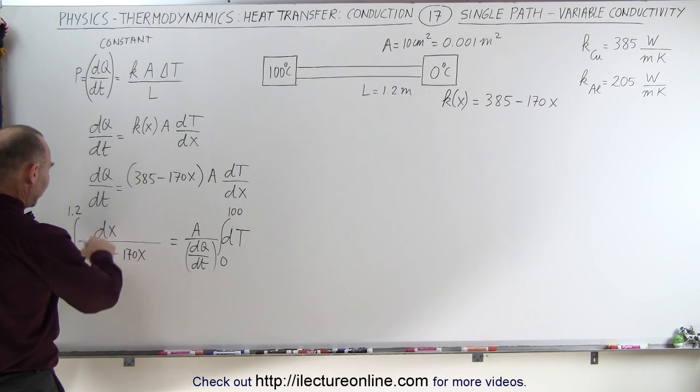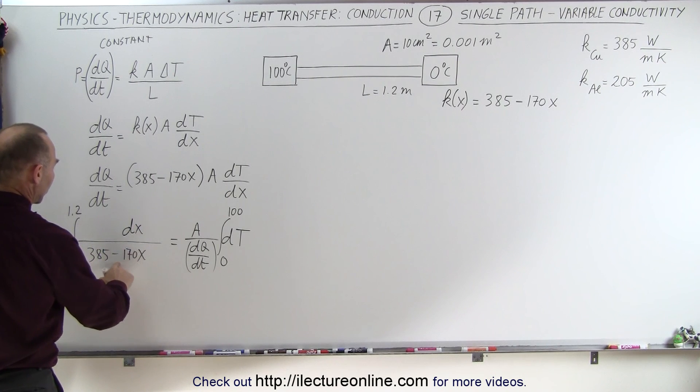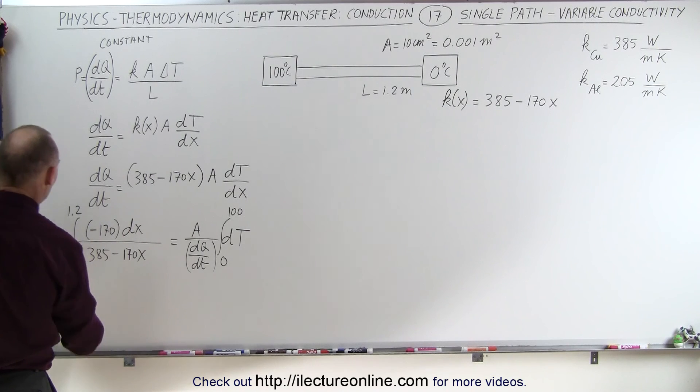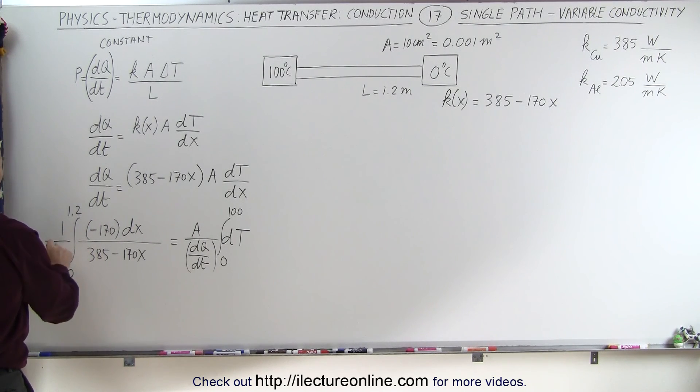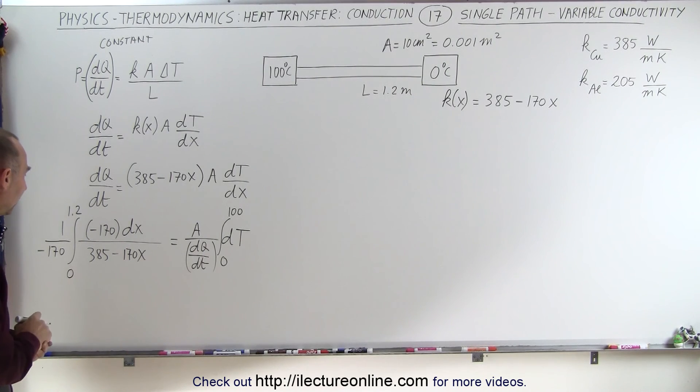But if we want to integrate this, we're going to need a proper differential. So let me move the dx over a little bit. So dx over here, we're going to need a minus 170. Of course, if we multiply the numerator times minus 170, we need to do the same to the denominator, otherwise we've changed the integral.